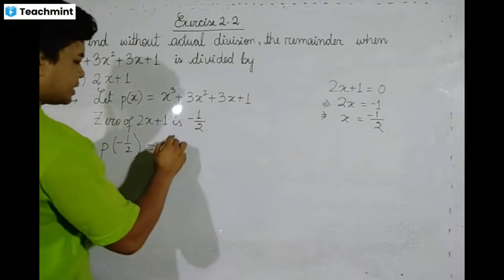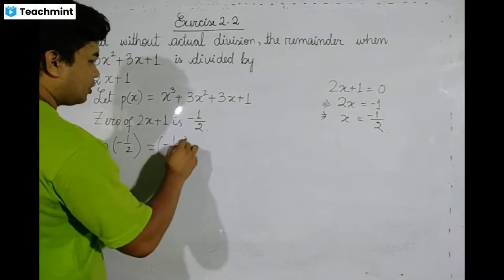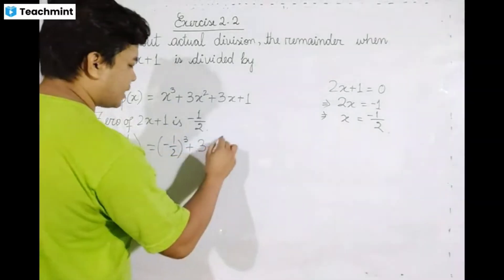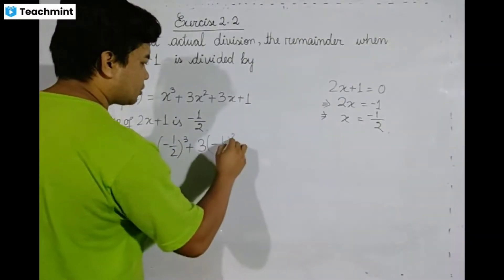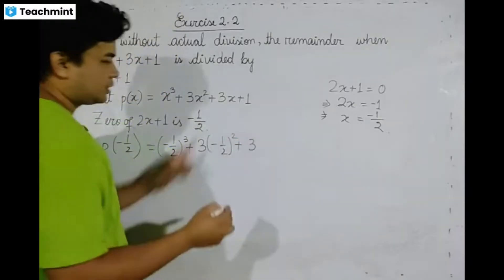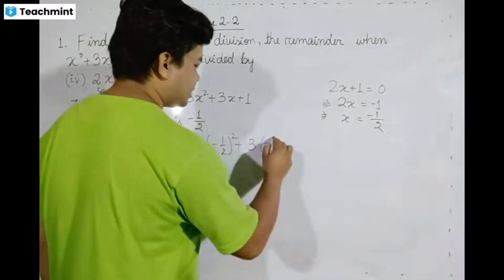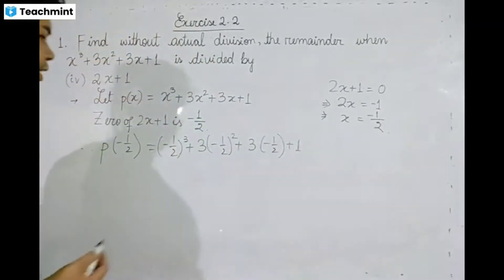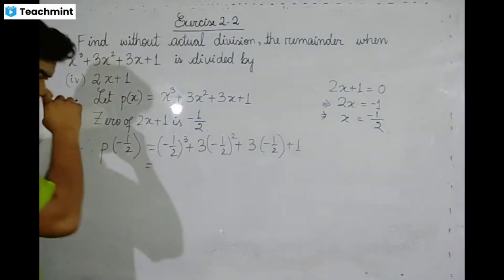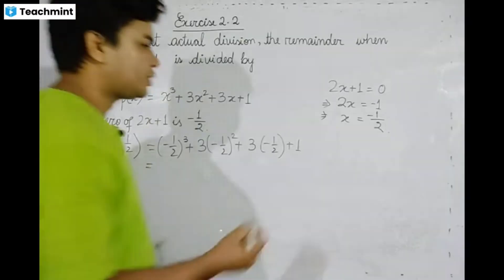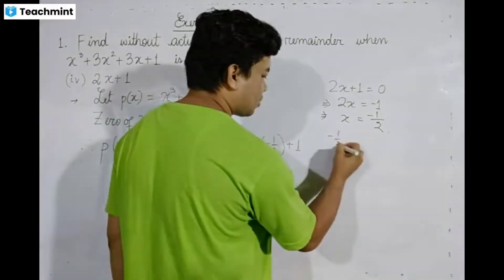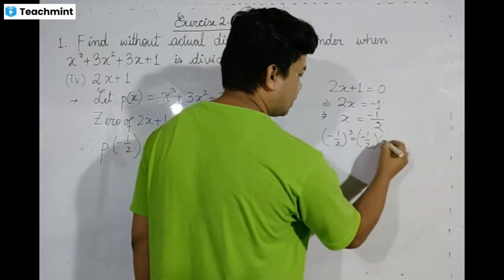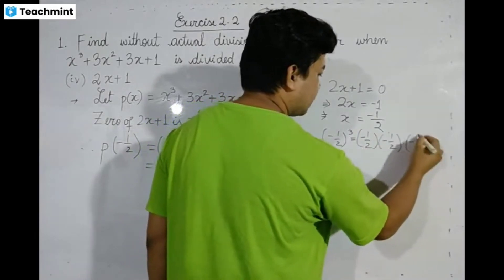p of minus 1 by 2 equals minus 1 by 2 whole cube plus 2 times minus 1 by 2 whole square plus 3 times minus 1 by 2 plus 1. We compute: minus 1 by 2, minus 1 by 2, minus 1 by 2.